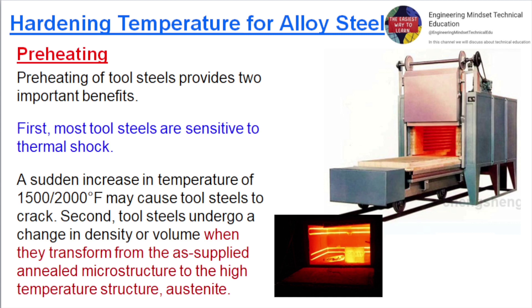Second, tool steels undergo a change in density or volume when they transform from the as-supplied annealed microstructure to the high temperature structure, austenite.